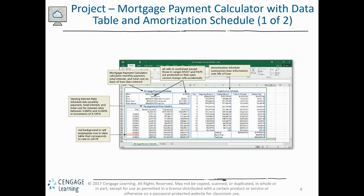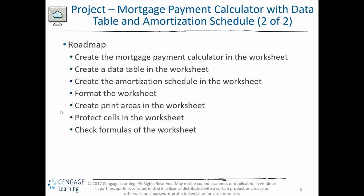Here is the roadmap. First, you will create the mortgage payment calculator in the worksheet. Then you will create a data table, create the amortization schedule, format the worksheet, and create print areas — where you can select only specific areas of the worksheet to print. Finally, you will protect cells and check formulas in the worksheet.